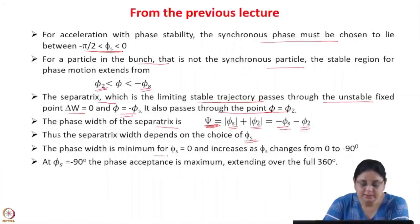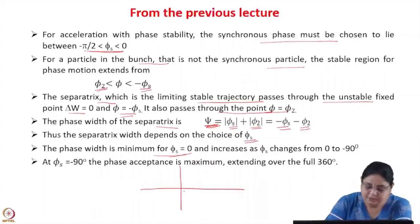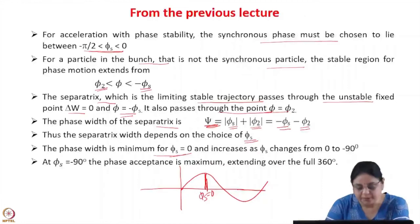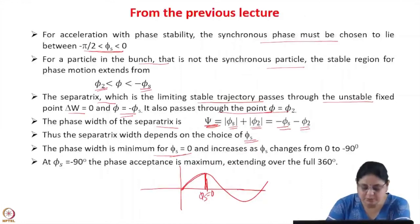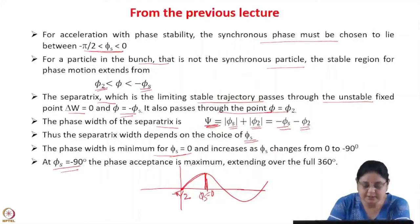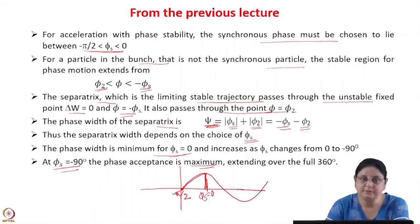The phase width is minimum for phi s equal to 0 — if we choose the synchronous phase to lie at the crest of the wave. Then the phase width is minimum, and it increases as you choose the synchronous phase from 0 to minus pi by 2. At minus pi by 2, or minus 90 degrees, the phase acceptance is maximum, extending over the full 360-degree phase.